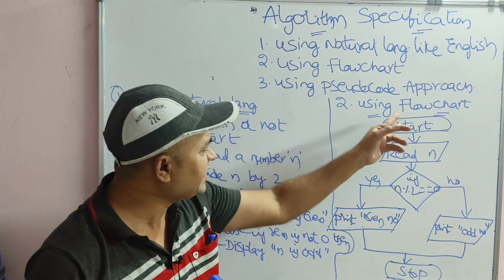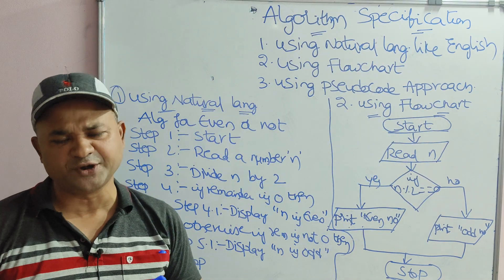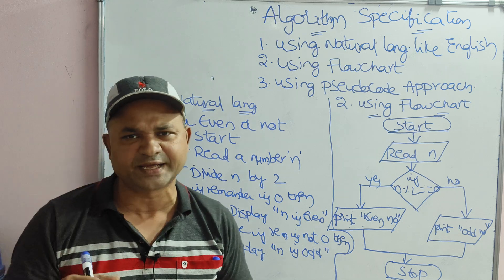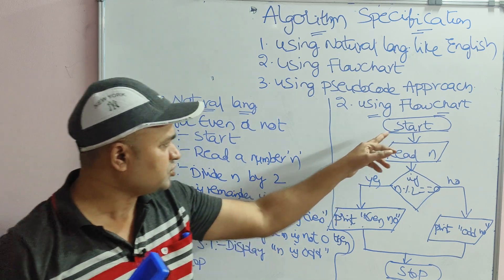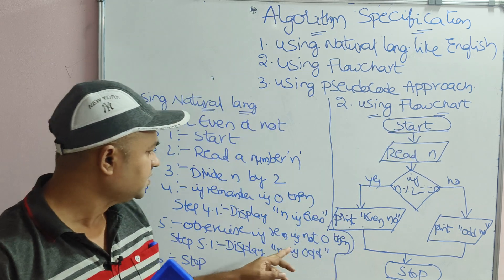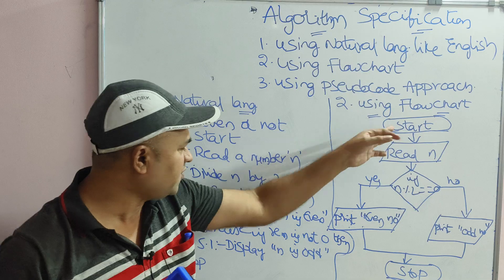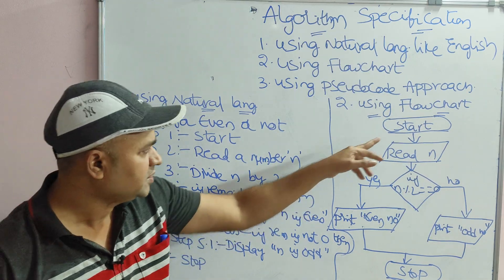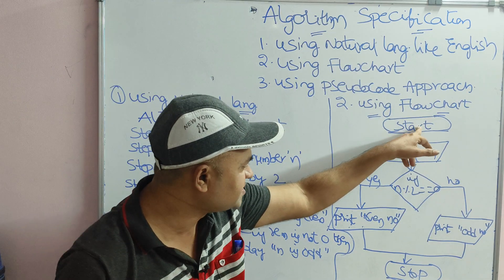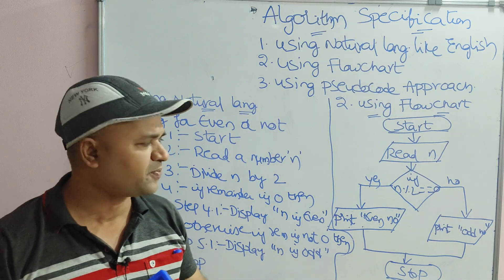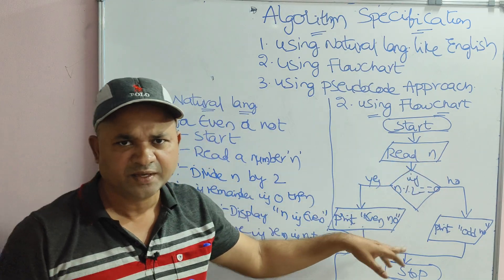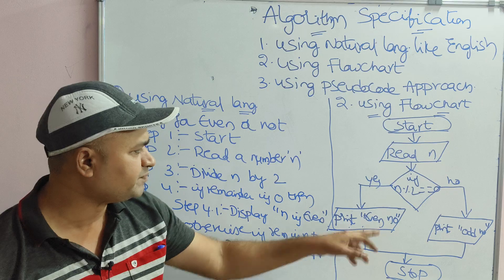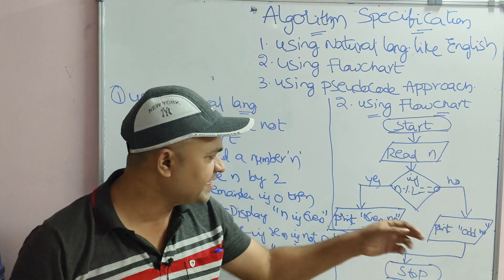The second approach is using flowchart notation — the symbolic notation. First step is start; last step is stop, represented by start and stop symbols. Next, read a number n using a parallelogram for reading and printing. Then use a rhombus for checking the condition: if n modulo 2 equals 0, then the number is even.